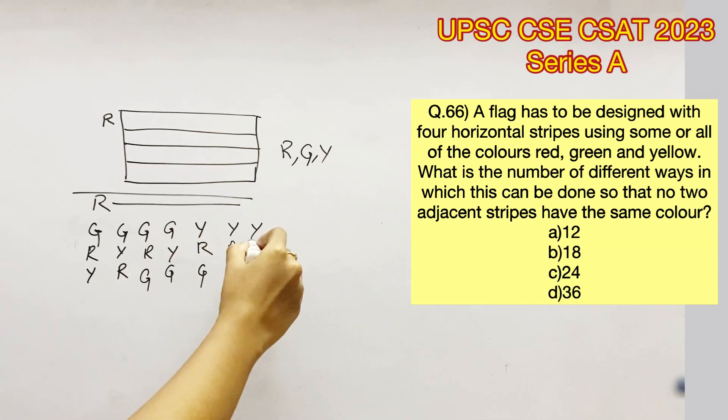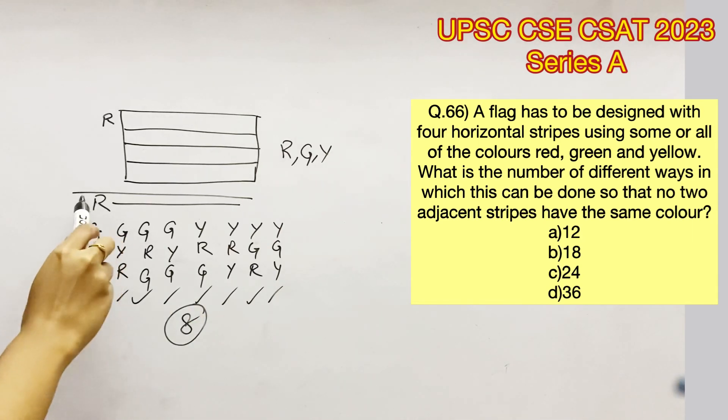That's a total of one, two, three, four, five, six, seven, eight different ways possible when we fix the first stripe as red.